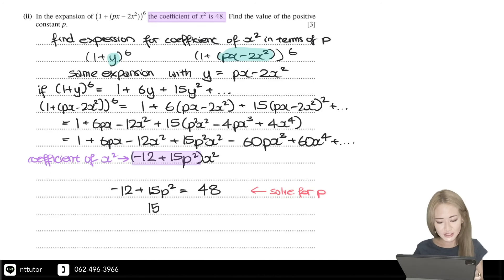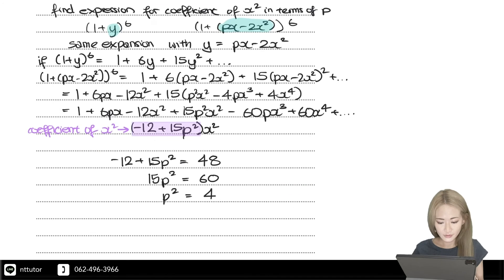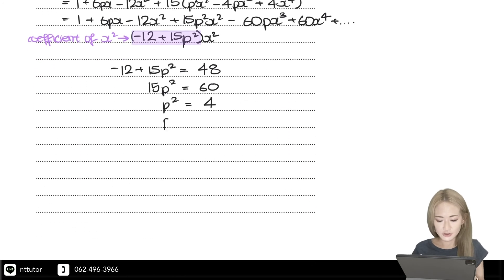If you solve for p, you should get 15p² = 60, p² = 4, and therefore p equals plus or minus the square root of 4. So p could equal 2 or -2.